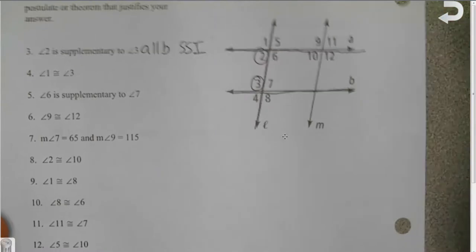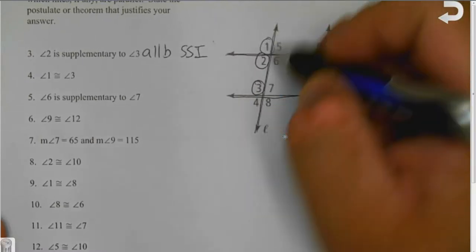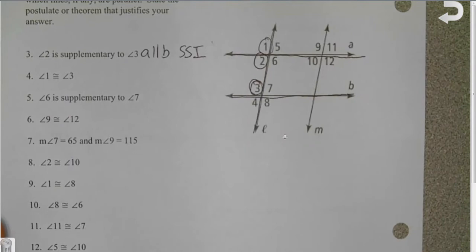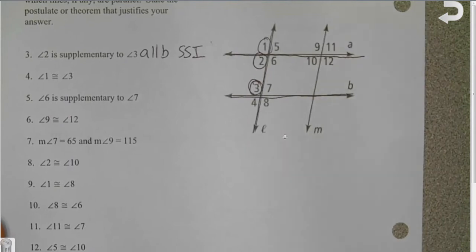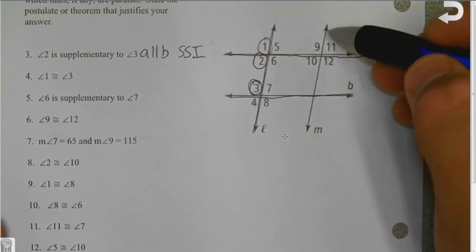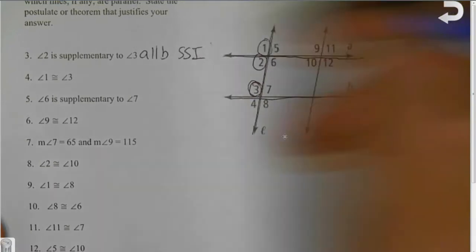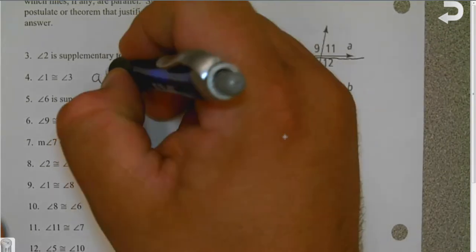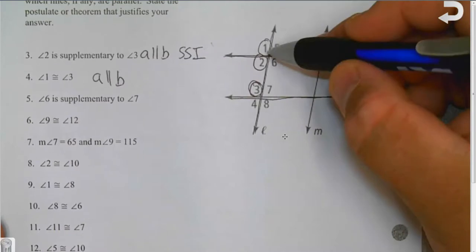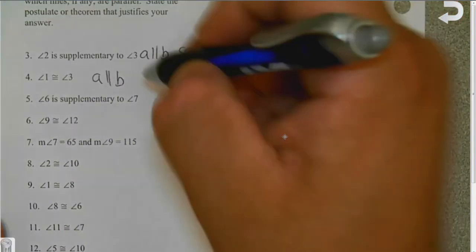The second one says 1 is congruent to 3. Well here's 1 and here's 3. Again, what two lines are parallel because of 1 and 3? Well we don't touch M so M is not involved. It's A is parallel to B and the reason is because 1 and 3 are corresponding.